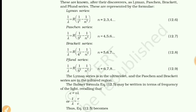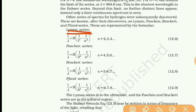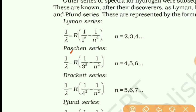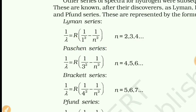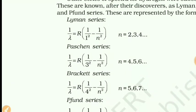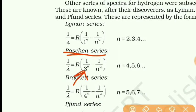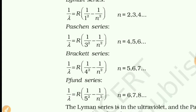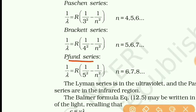The Paschen series is observed in the near-infrared region — the infrared region can be divided into near, middle, and far infrared. Always remember: the first series of hydrogen spectra is the Lyman series. In the formula, for Lyman series it is 1² and n starts from 2, 3, 4. The second is Balmer series, it starts with 2² and n starts from 3, 4, 5. The third is Paschen series — 3² and n starts from 4, 5, 6. Brackett is the fourth series — 4² and n starts from 5, 6, 7. Fund series is the fifth — 5² and n starts from 6, 7.